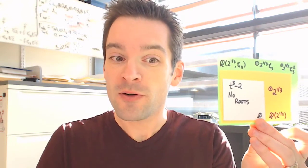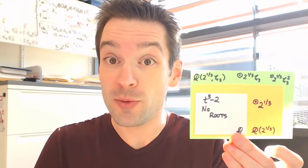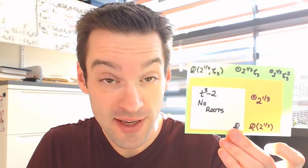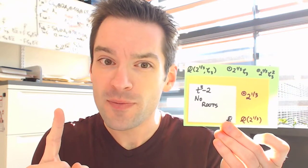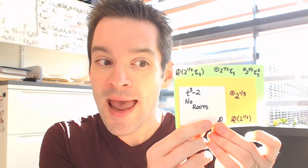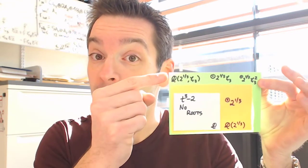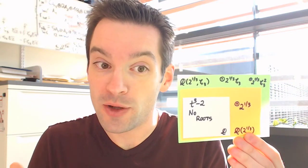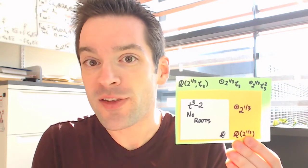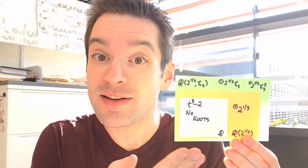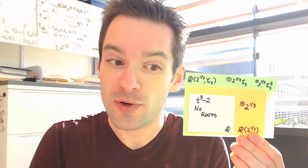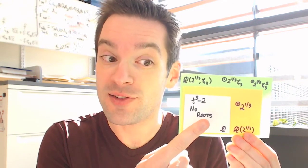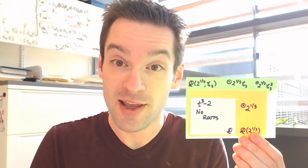What we found was that it actually requires a two-step process. First, we have to include the real cubed root of 2 — the one that you would get if you asked a calculator what is the solution to t cubed minus 2. But that only gives you one out of the three roots, and the other two have to be found by extending one more time to include the third root of unity, which is a non-real number. So in order to find the splitting field, we had to take two steps, and at each one of those steps we only got one additional root: 2 to the 1/3 in the first case, and then 2 to the 1/3 times the third root of unity in the second.